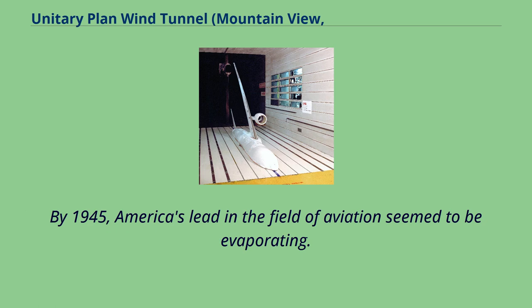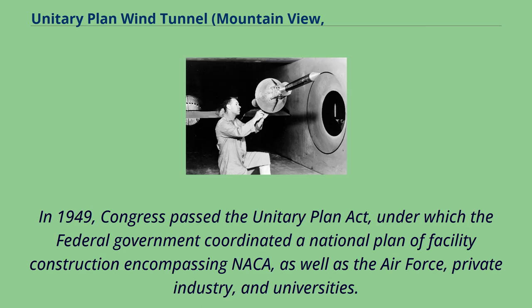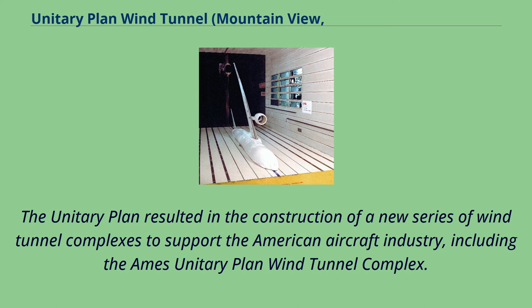By 1945, America's lead in the field of aviation seemed to be evaporating. The technological achievements of German missiles and jet aircraft indicated a lag in American aeronautical research. In 1949, Congress passed the Unitary Plan Act, under which the federal government coordinated a national plan of facility construction encompassing NACA, as well as the Air Force, private industry, and universities. The Unitary Plan resulted in the construction of a new series of wind tunnel complexes, including the Ames Unitary Plan Wind Tunnel Complex.